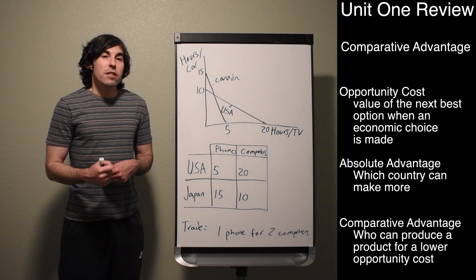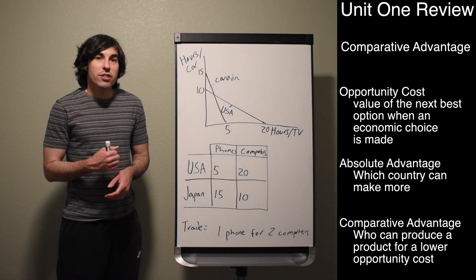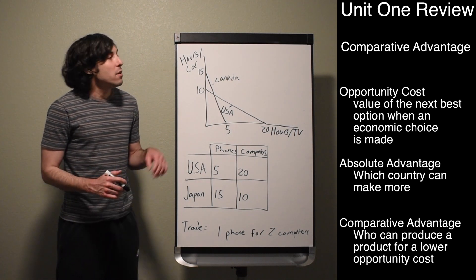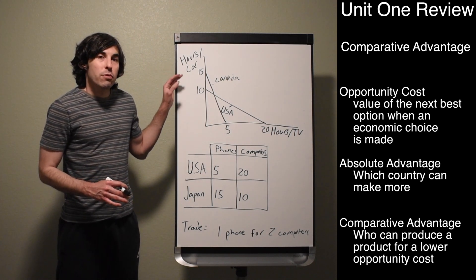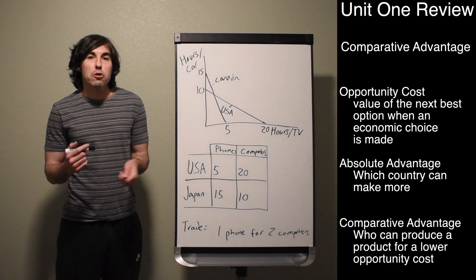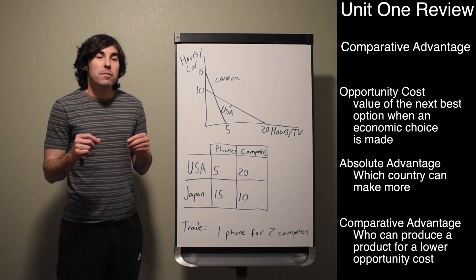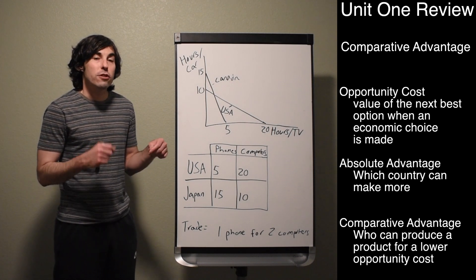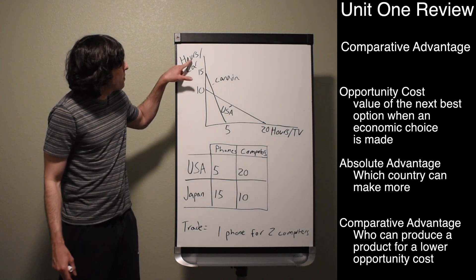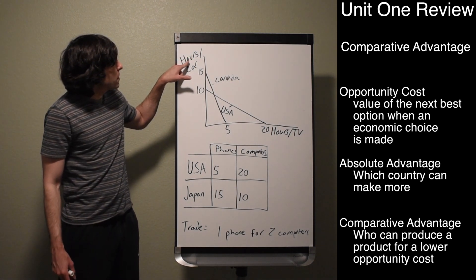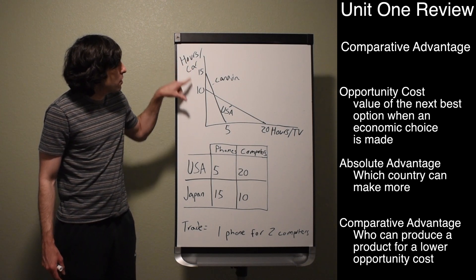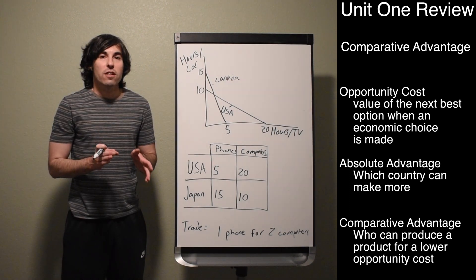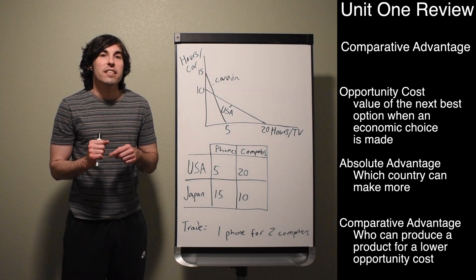The other thing you have to remember for unit one is comparative advantage, absolute advantage, opportunity costs, and trade. Remember, there are two types of problems: input problems and output problems. An input problem is a question telling you how many inputs it takes each country to produce one good — for example, how many hours it takes to produce a car or a TV.